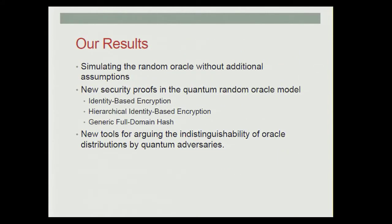We extend these results. First, Boneh et al. required the existence of a quantum-secure pseudorandom function, and we show how to remove that assumption from their results as well as ours. Next, we provide new security proofs in the quantum random oracle model — particularly, we prove the security of an identity-based encryption scheme, two hierarchical identity-based encryption schemes, and full domain hash for any possible secure trapdoor permutation. To accomplish these results, we develop new tools to argue the indistinguishability of oracle distributions by quantum adversaries.